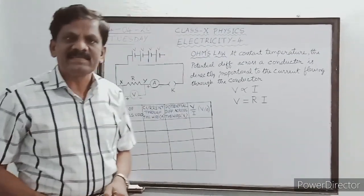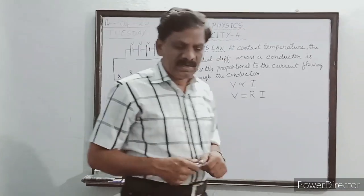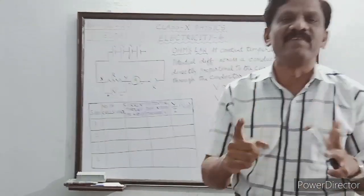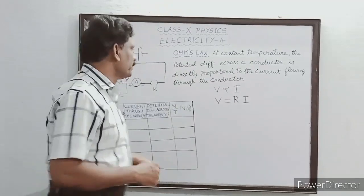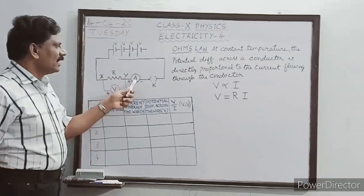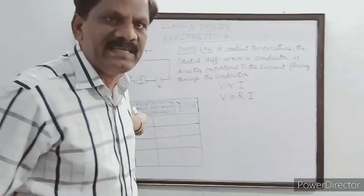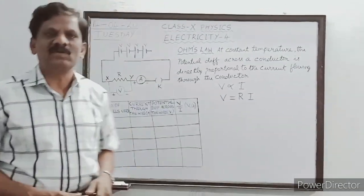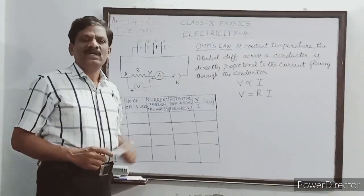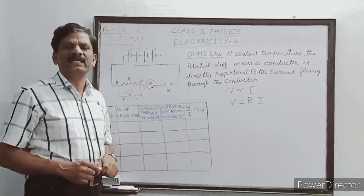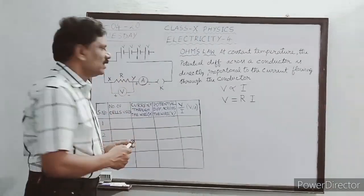The instrument represented by V is the voltmeter. It is used to measure the potential difference between the two ends of the conductor. Then in series, another instrument represented by capital A is the ammeter, which is used to measure the electric current.